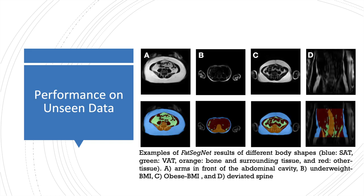Furthermore, the proposed pipeline exhibits high robustness and generalizability across a wide range of age, BMI, and a variety of body shapes, even in extreme cases when the arms are in front of the abdominal cavity or in cases of deviated spines.